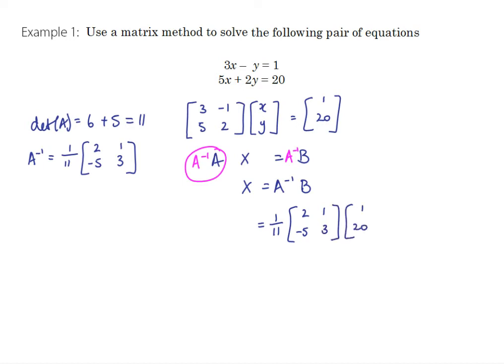So let's put that in here: 1 on 11 times the matrix 2, 1, negative 5, 3 and we're multiplying that by b which is 1, 20. Let's do the matrix multiplication. 2 by 2 times 2 by 1 should give us 2 by 1. Row times column so 2 times 1 is 2 plus 1 times 20 is 22. Negative 5 times 1 is negative 5 plus 3 times 20, so negative 5 plus 60 is positive 55.